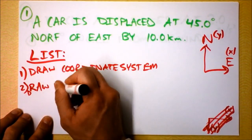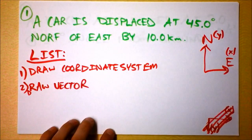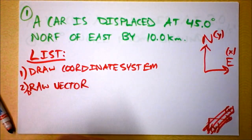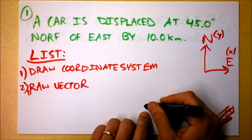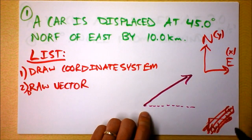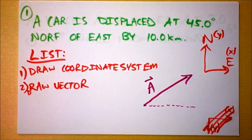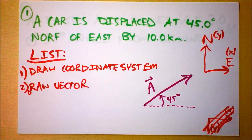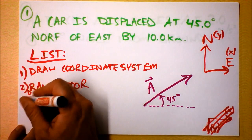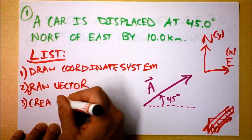Draw the vector. I need my vector to be 45 degrees north of east, so I'll draw east first — that's the east direction — and then I need to be north of it by 45 degrees. 45 degrees is splitting right there, so I'll put it right there and this is my vector. Let's call it vector A, pointing up there, labeled as 45 degrees north of east. Notice it's not east of north — it's north of east.